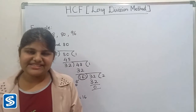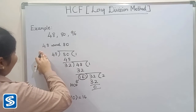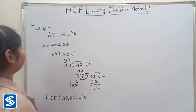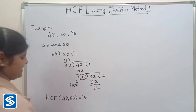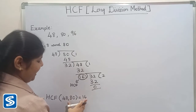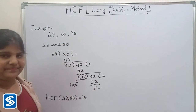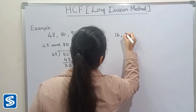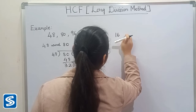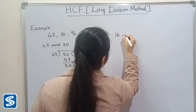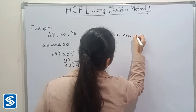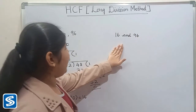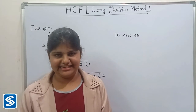Next we have to find the HCF of 48, 80, and 96. Here the HCF of 48 and 80 is 16, so now we have to take 16 and 96 and find the HCF of 16 and 96.